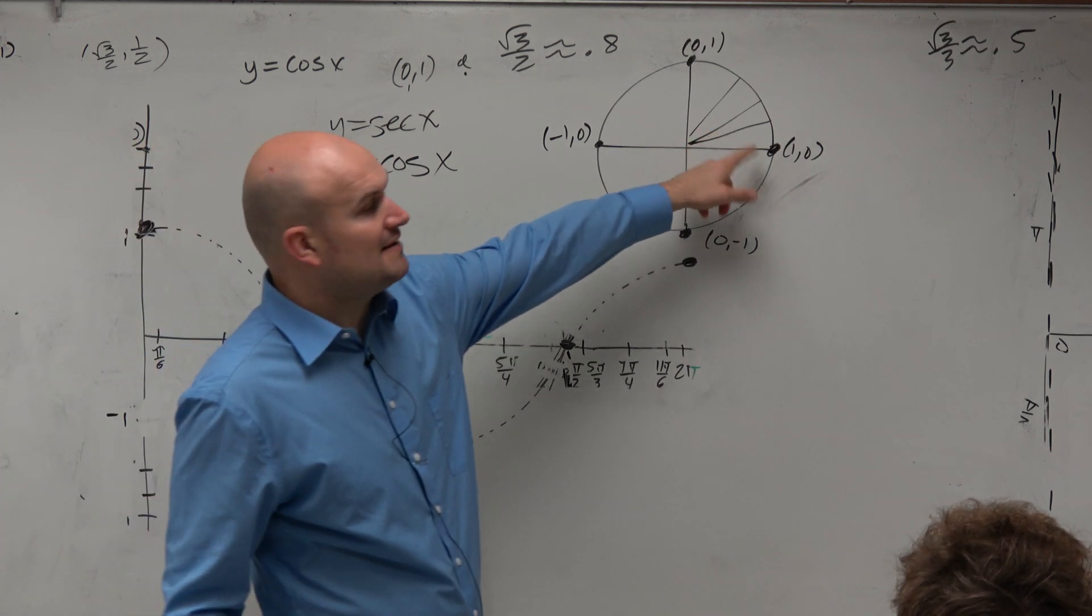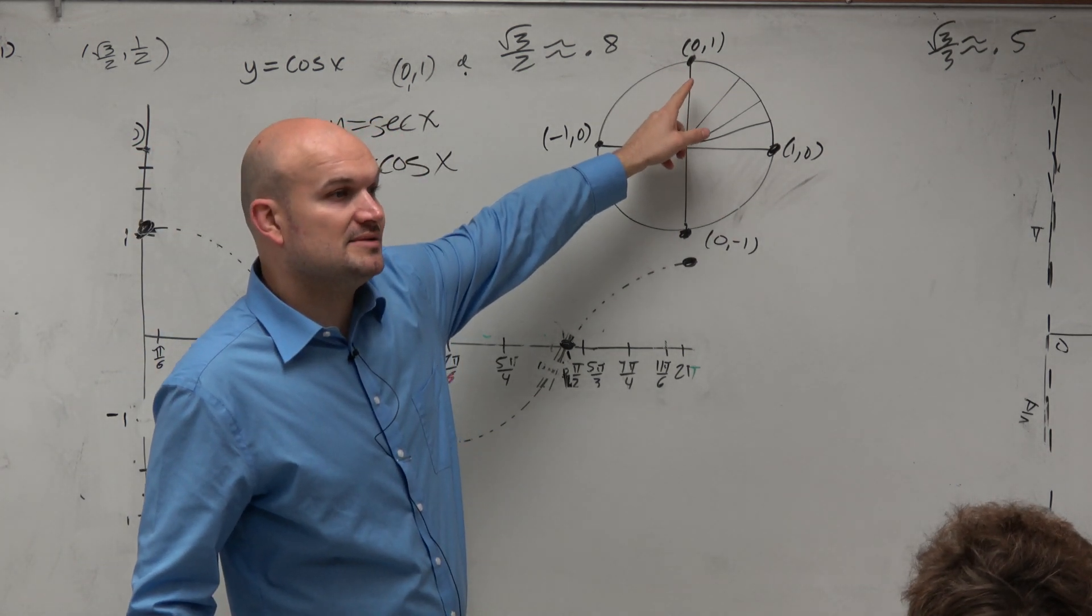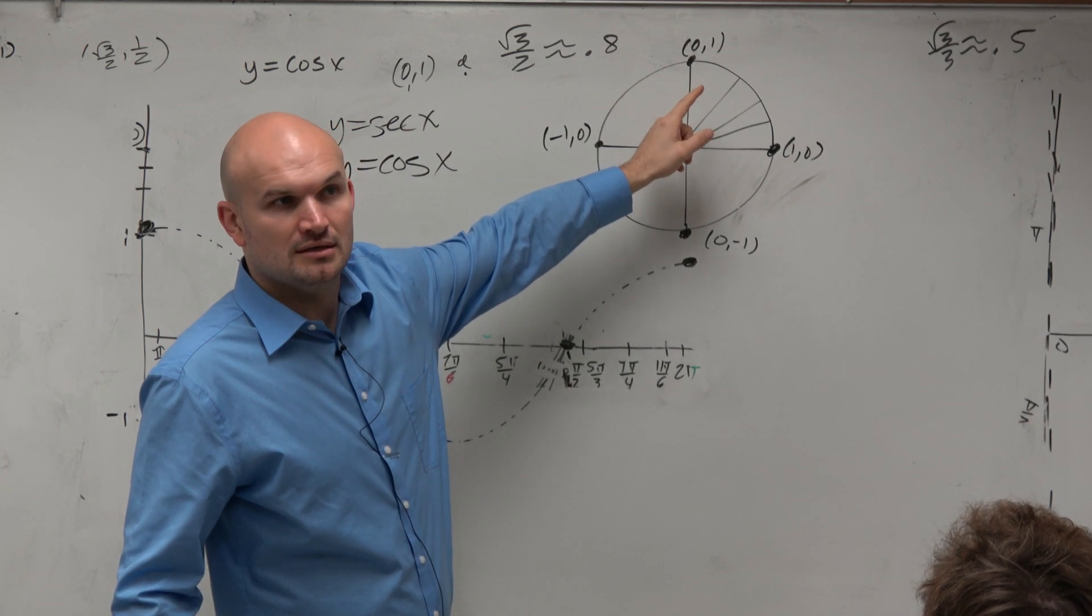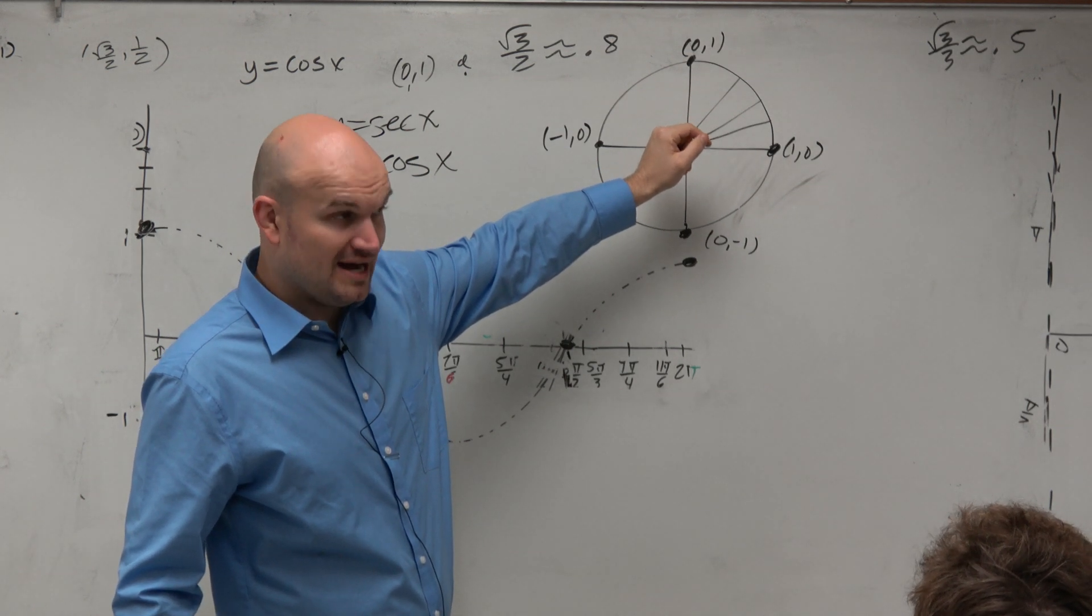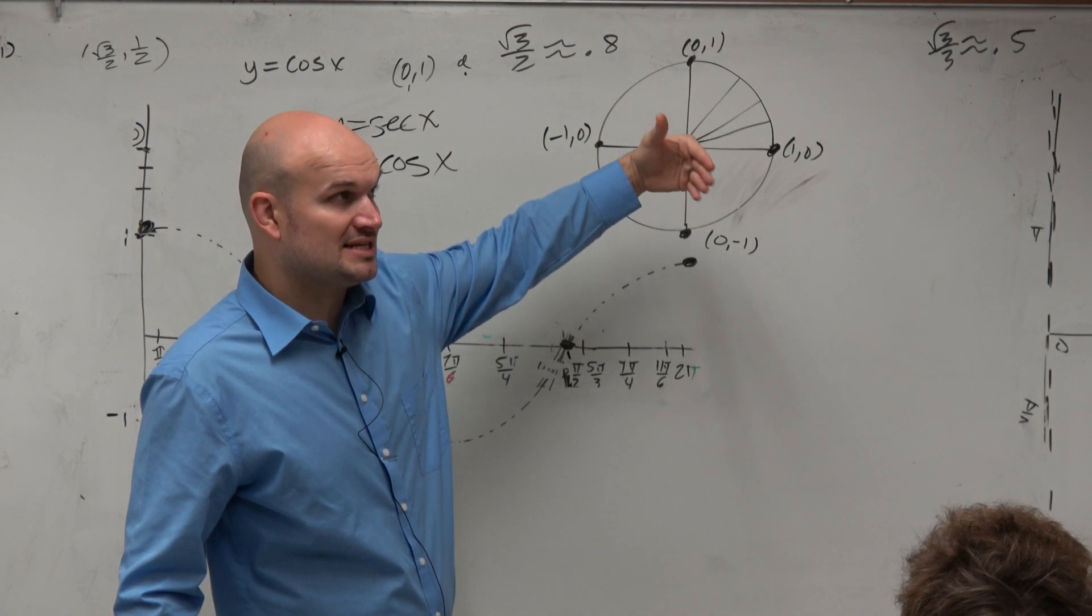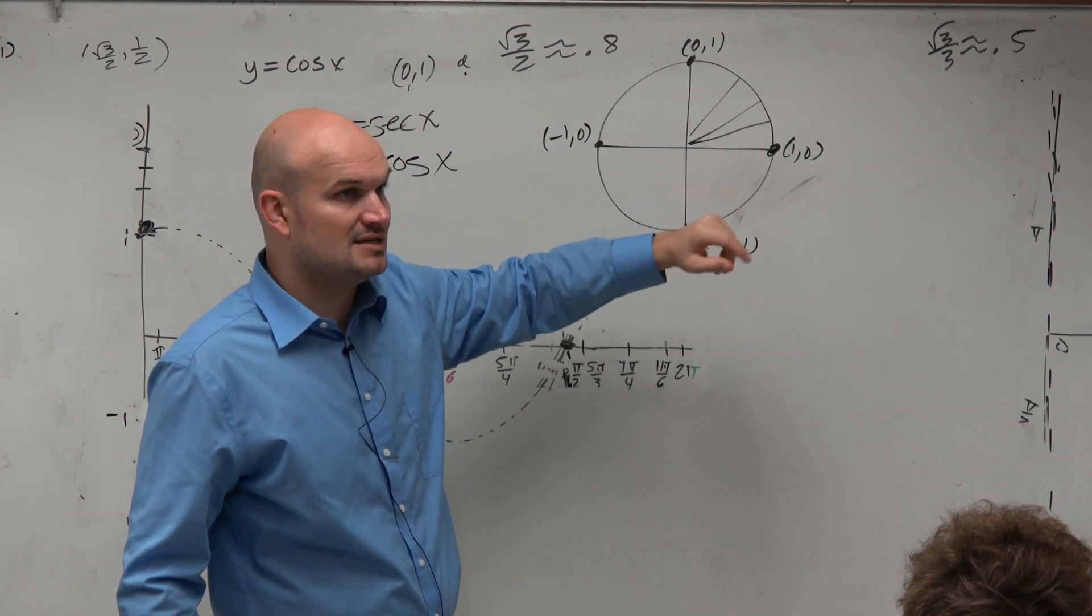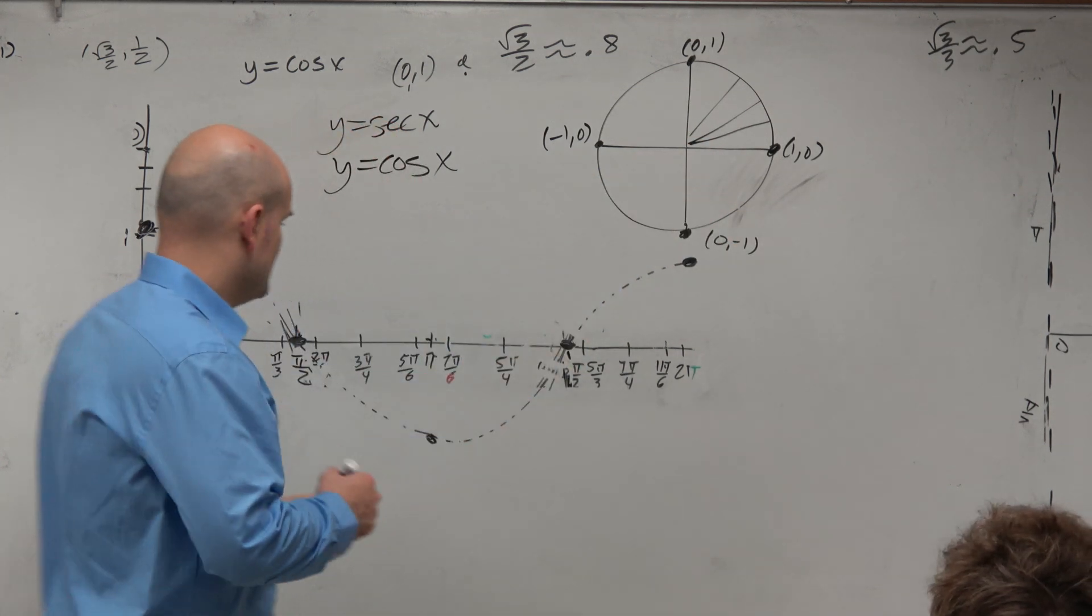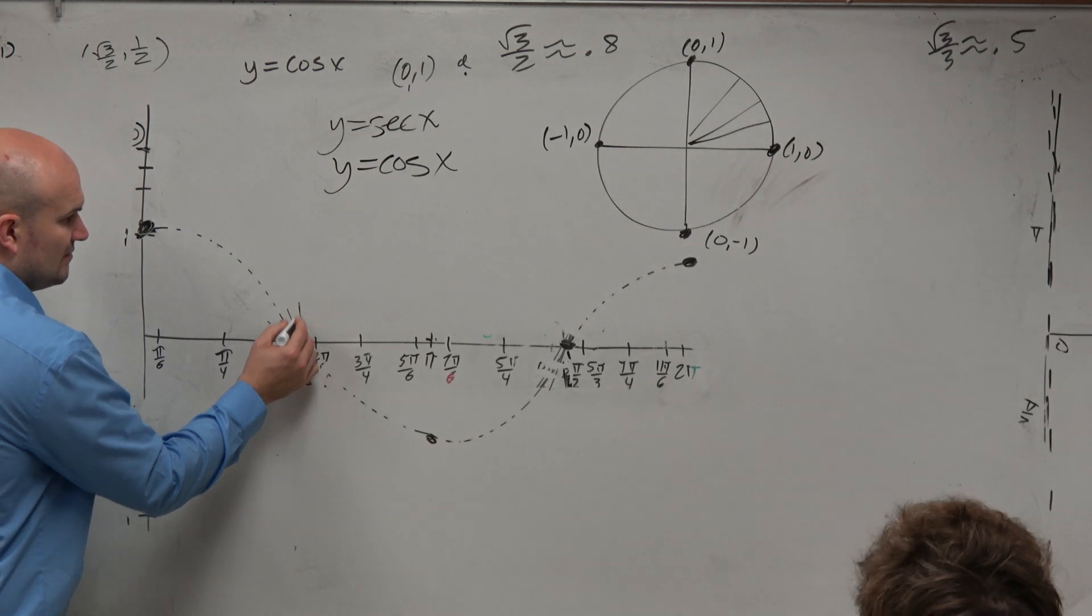All right. Now let's go to pi halves. The secant of pi halves would be 1 over 0, which is undefined. And we represented undefined values last class period with the tangent function as asymptotes. So at pi halves, we have a vertical asymptote.